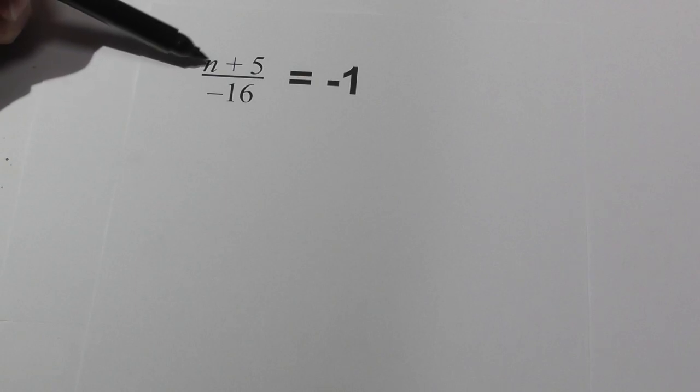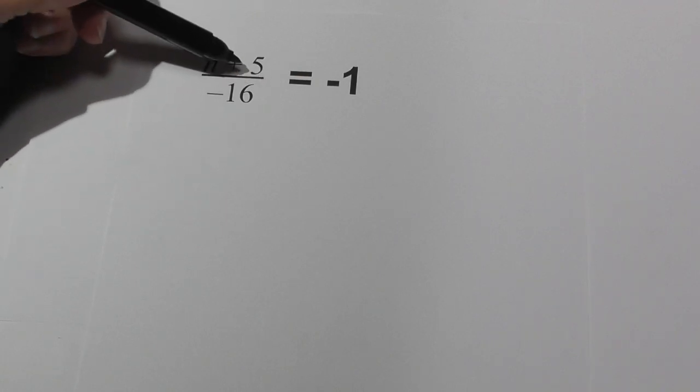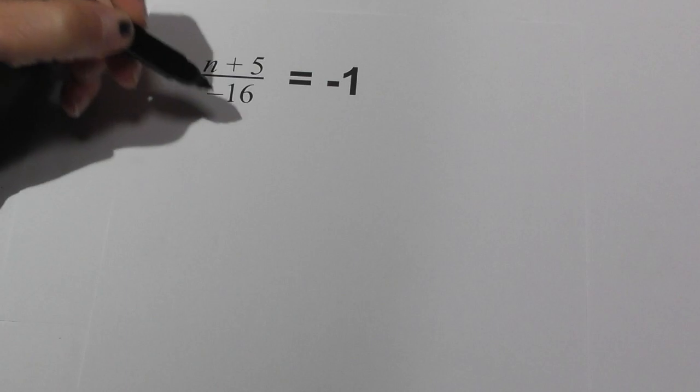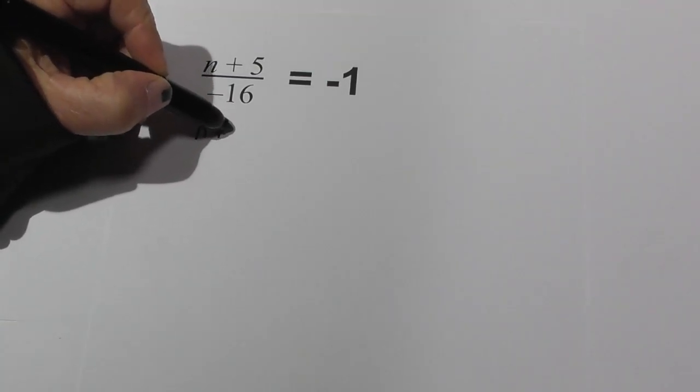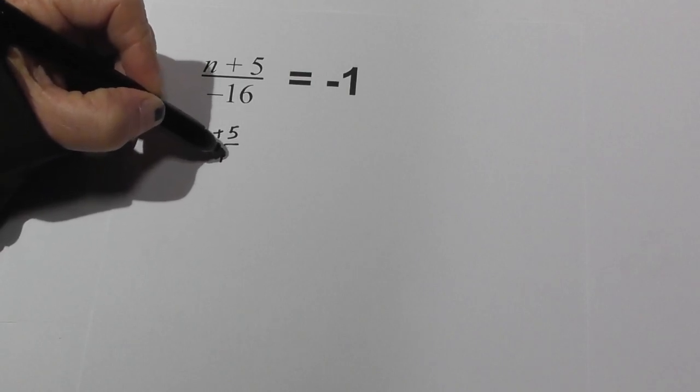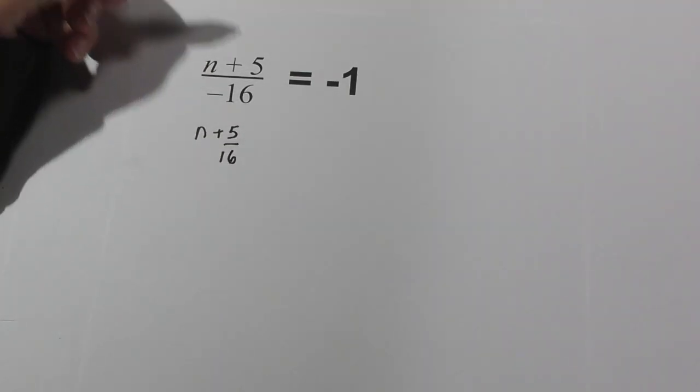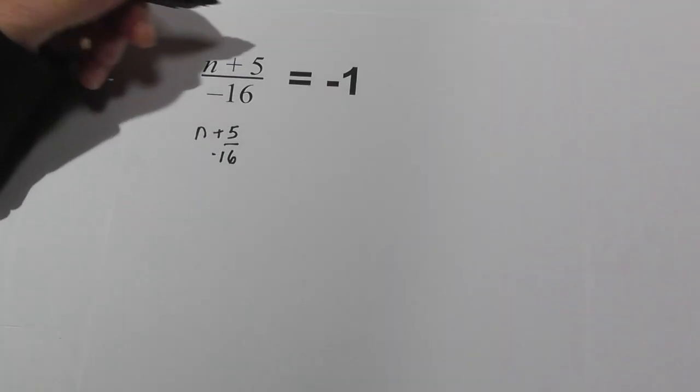We can do this by completing an opposite operation, so we're going to add 5 over 16. So we have n plus 5 over 16, and then the 16 is negative, and we're going to add it to 5 over 16.